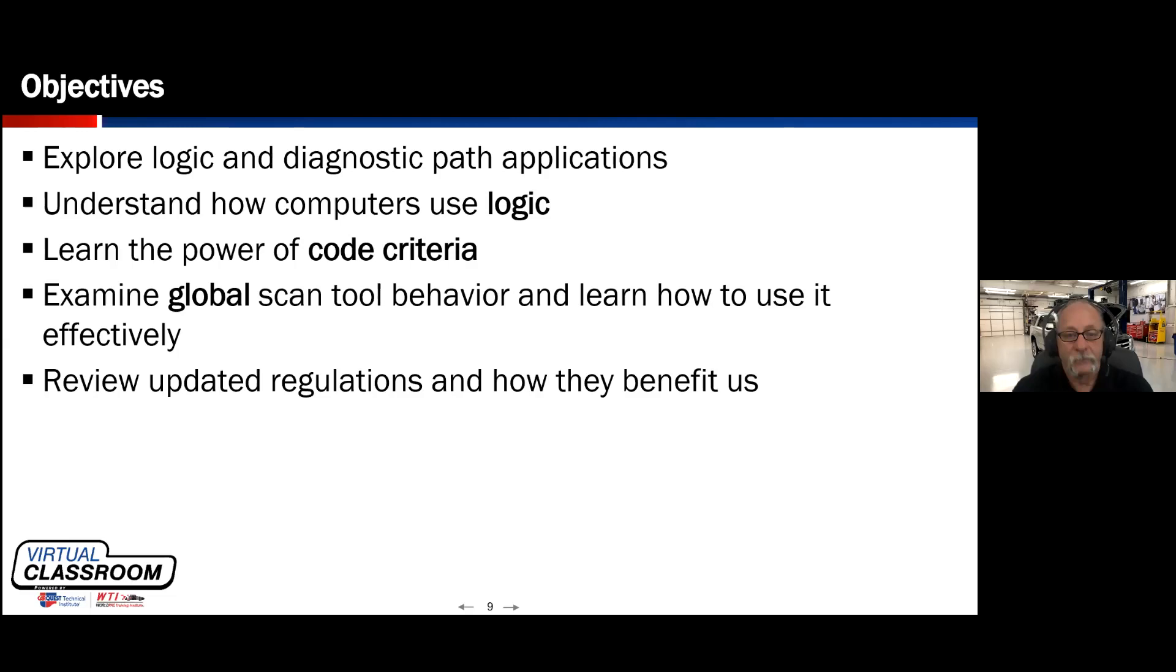When we have a problem, all of us have been in a situation where we've got a broken car in front of us, and we say, well, this problem should have set XYZ fault code, and it didn't, or it set a fault code that maybe we weren't expecting. Well, that's because the code set criteria that the problem fell into met the code set criteria for whatever fault code did set, or the fault didn't meet the right criteria to set a fault code based on how the computer was programmed. And we're going to look at how we can leverage that to start to gain diagnostic direction.